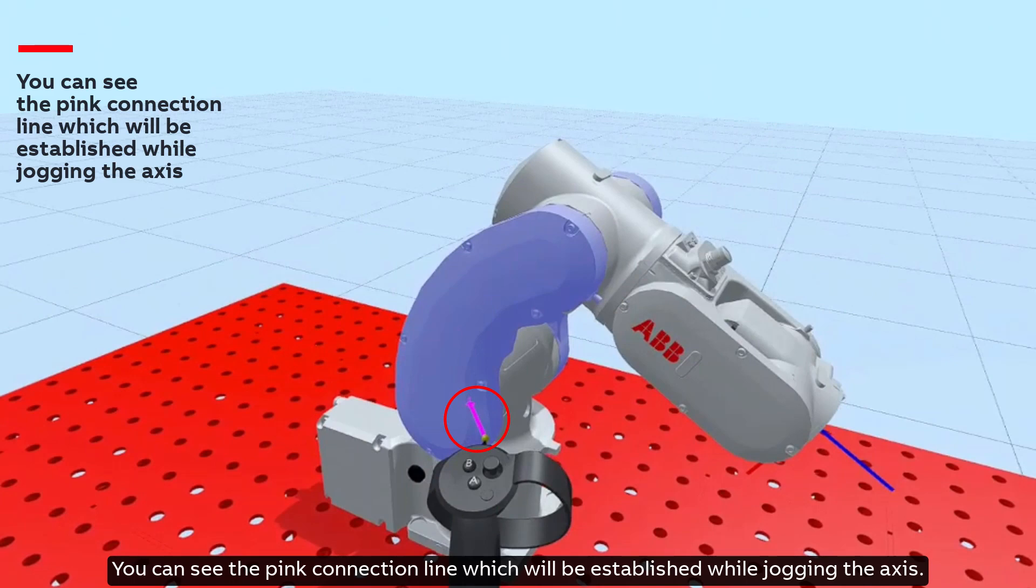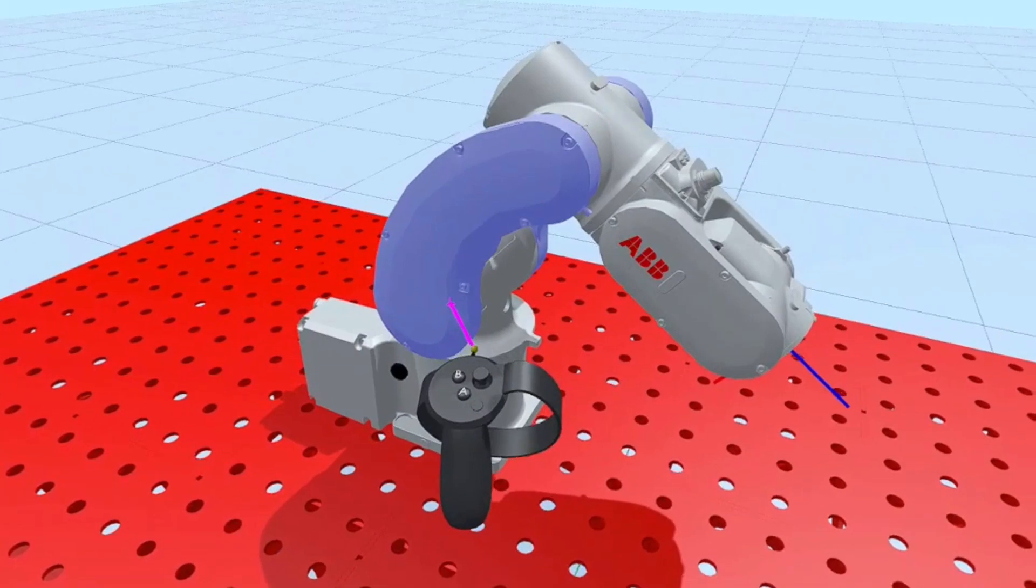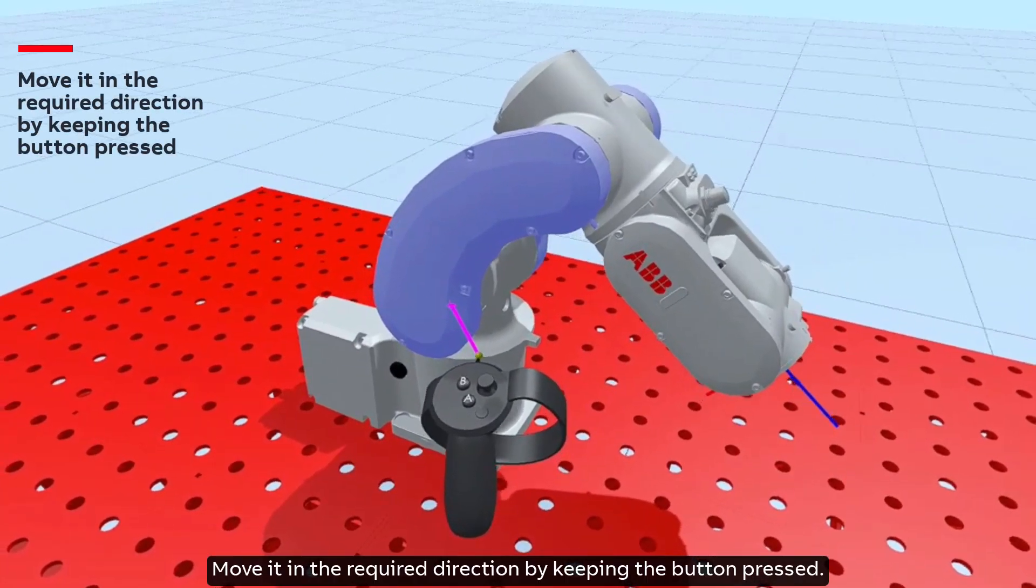You can see the pink connection line which will be established while jogging the axis. Move it in the required direction by keeping the button pressed.